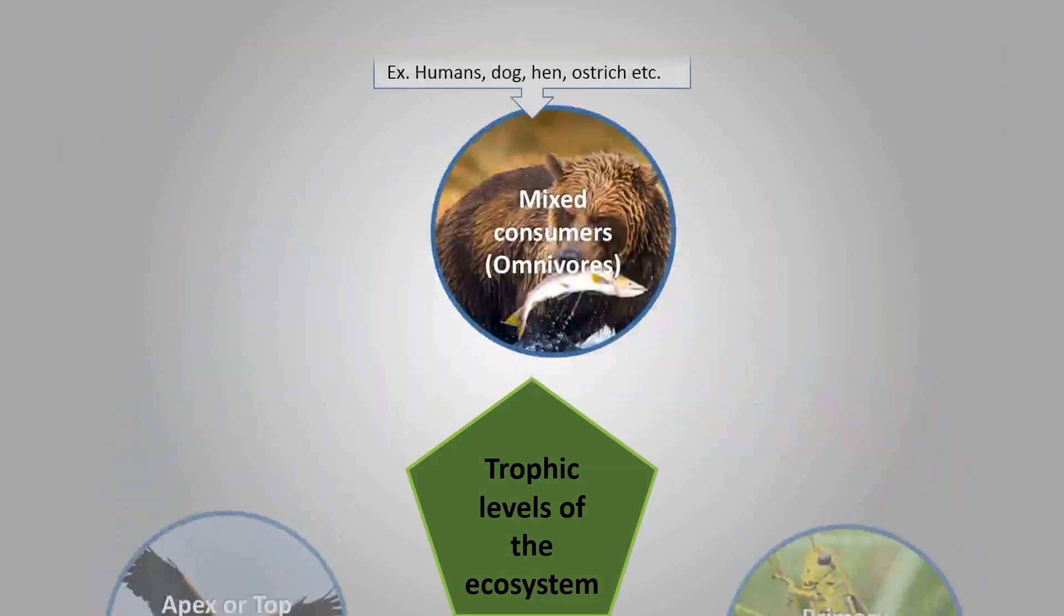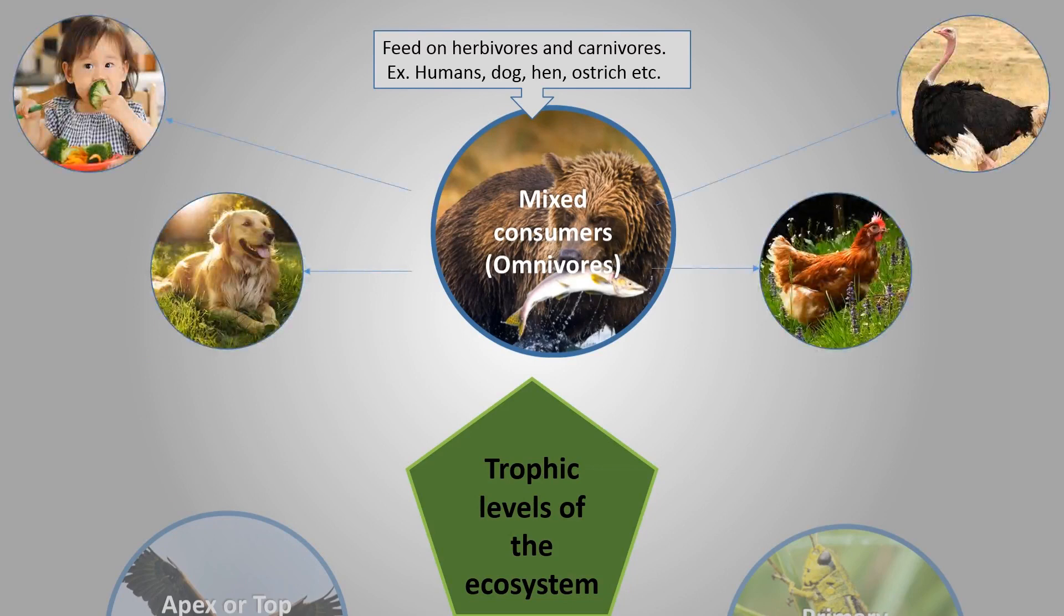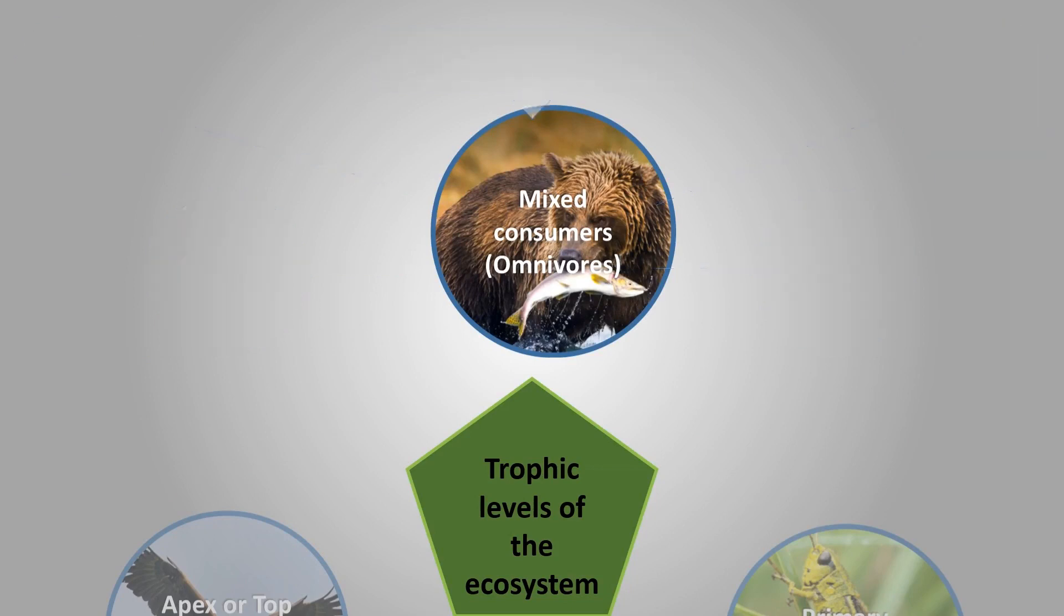Mixed consumers, these feed on herbivores and carnivores. Examples: human, dog, hen, ostrich, etc.